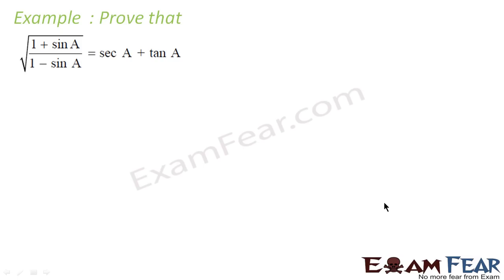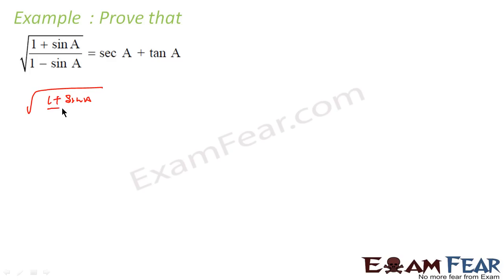One more example: √((1 + sinA)/(1 − sinA)) = secA + tanA. Here also we need to rationalize. Because if you rationalize this — multiply by (1 − sinA) — this becomes (1 − sin²A), which becomes cos²A. So the first thing is to multiply this by (1 + sinA) over (1 + sinA).